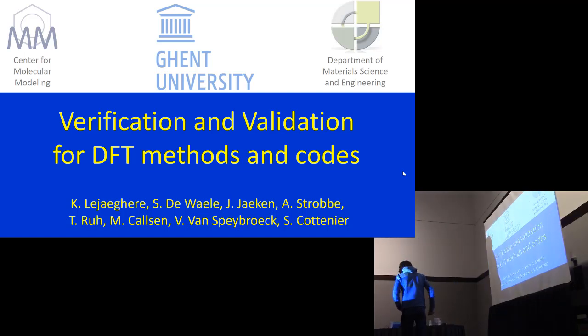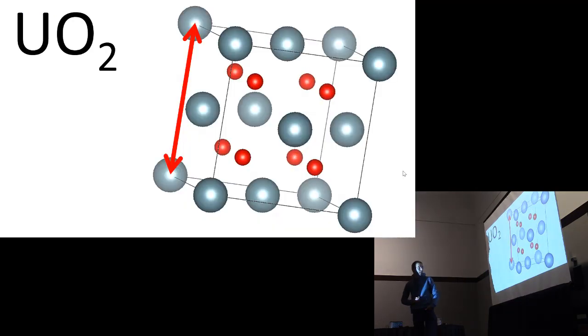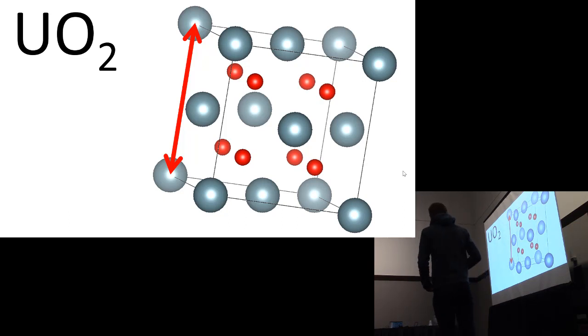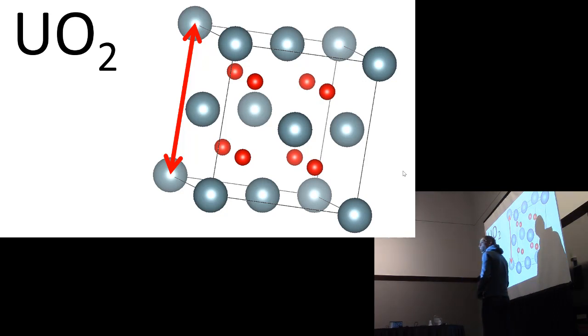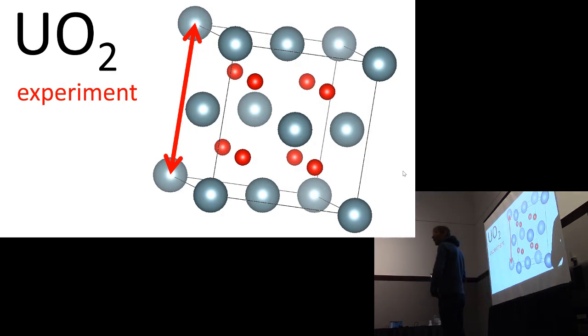Verification and validation for DFT methods and codes. Let's browse through the literature and pick more or less randomly a solid in which people are interested: uranium dioxide, a fuel material in fission reactors. There is some interest in knowing accurately the lattice parameter of this uranium dioxide. How is that done in experiment?